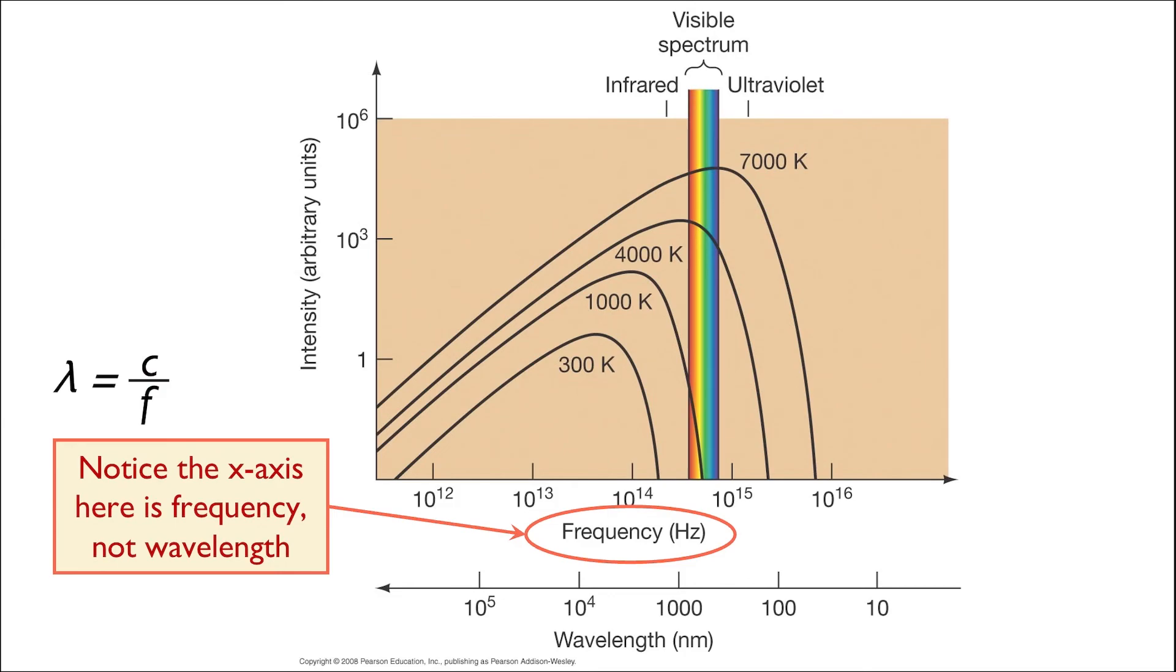So we could see the corresponding wavelengths to each frequency added below. The vertical axis still represents the intensity of light, just as before, which means that all of the peaks of the curves here are also the lambda max of each spectrum.